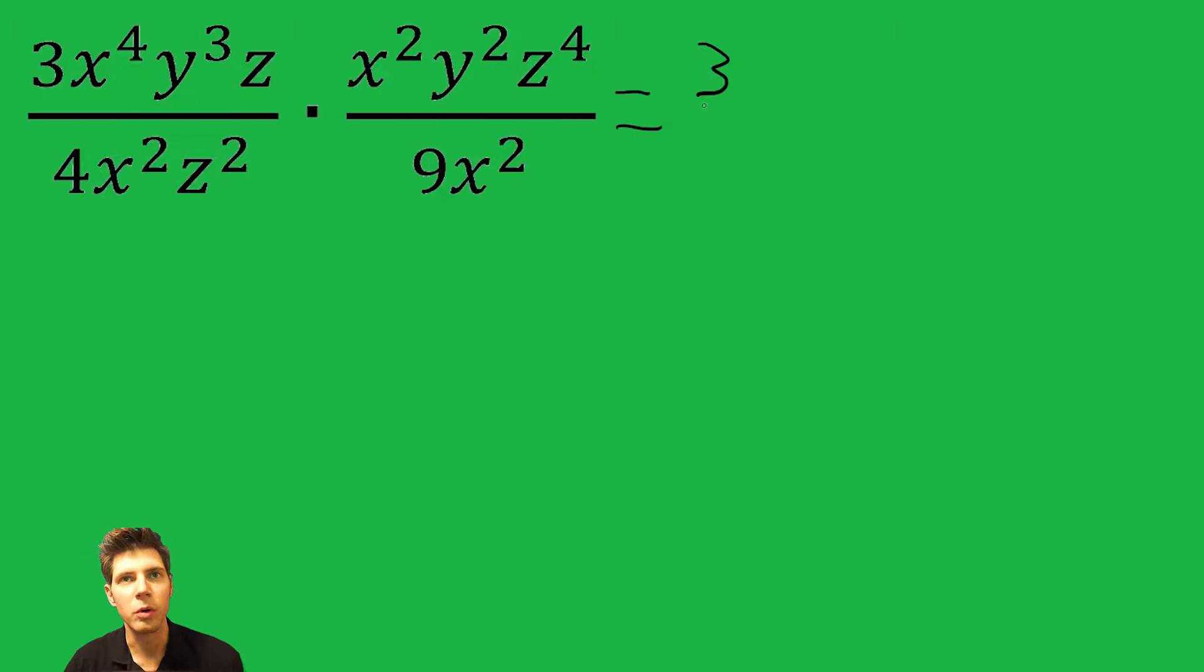So 3 times 1 is 3. x to the 4th times x squared is x to the 6th. We end up adding them. y cubed plus y squared is y to the 5th. And z plus z to the 4th is z to the 5th. So that's our top.